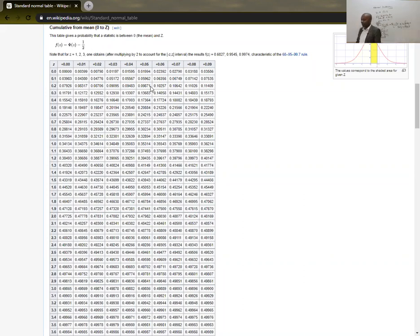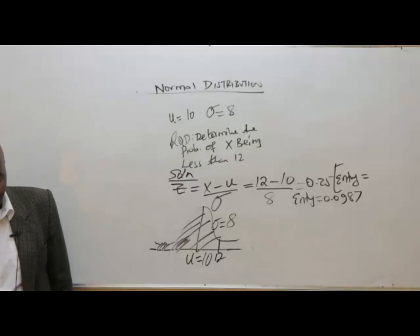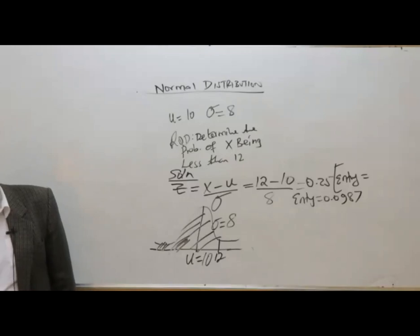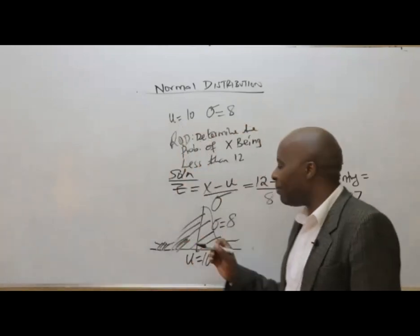I've come to Z of 0.2, all the way across to 0.25 — I can see the 0.05 column — and I get 0.0987. Let me check again: is it 0.987 or 0.0987? It is 0.0987. Thank you very much.